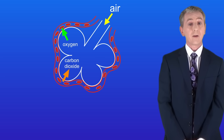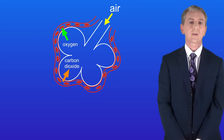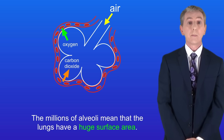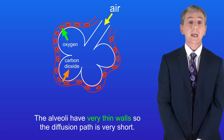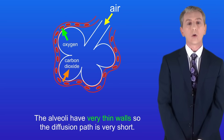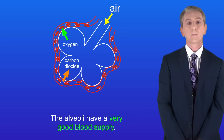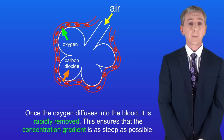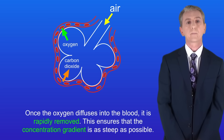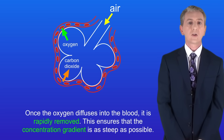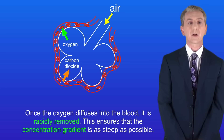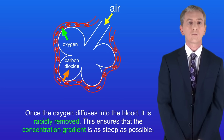The alveoli have several adaptations to make the rate of gas exchange as fast as possible. First, the millions of alveoli mean that the lungs have a huge surface area. Secondly, the alveoli have very thin walls, so the diffusion path is very short. And lastly, the alveoli have a very good blood supply — once oxygen diffuses into the blood it is rapidly removed, which ensures that the concentration gradient is as steep as possible. These adaptations mean that oxygen diffuses rapidly into the bloodstream and carbon dioxide diffuses rapidly out.